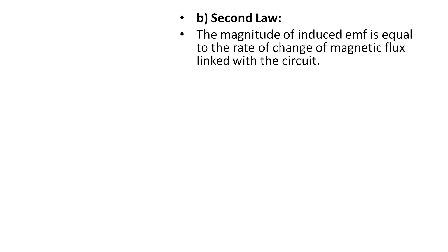The second law states that the magnitude of the induced EMF is equal to the rate of change of magnetic flux linked with the circuit. If φ (phi) is the magnetic flux linked with the circuit, then EMF is directly proportional to the rate of change of magnetic flux, i.e., EMF = -dφ/dt.